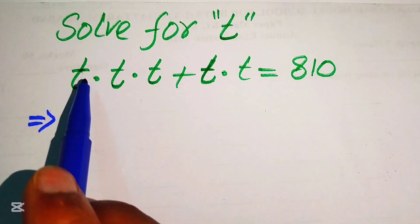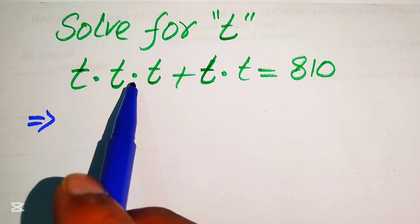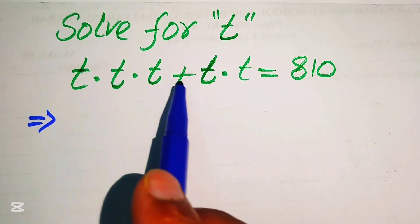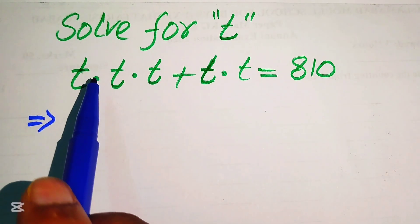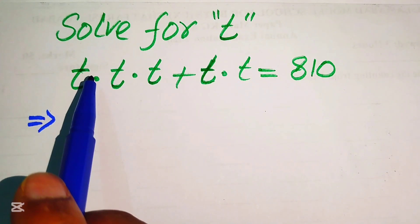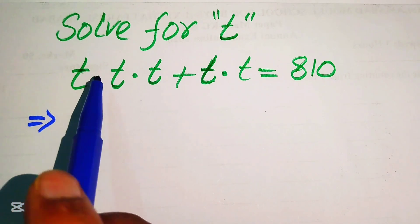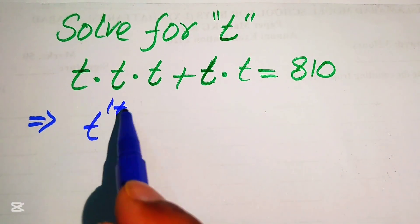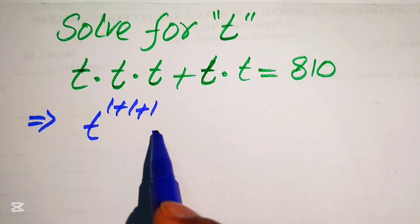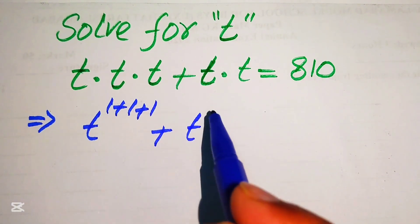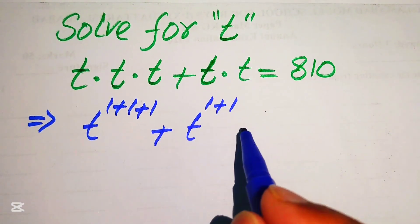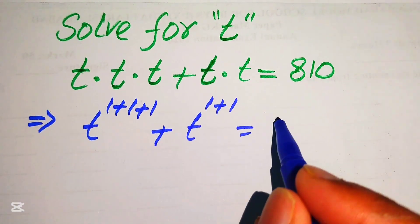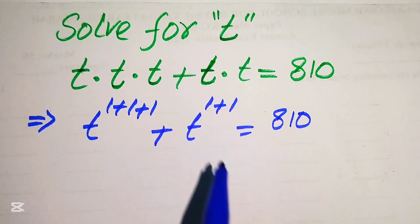First, focus on the exponent of this value. You see here the basis of all these values are the same and their exponents are also the same. So according to the exponent law, since the bases are the same, we add the exponents. We write the first term as t to the power of 1 plus 1 plus 1, and similarly we write the second term as t to the power of 1 plus 1, equals to 810.